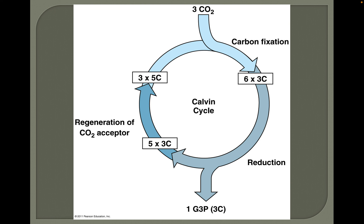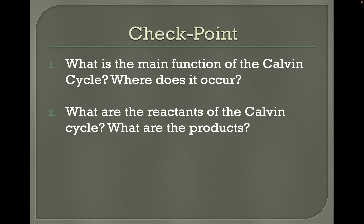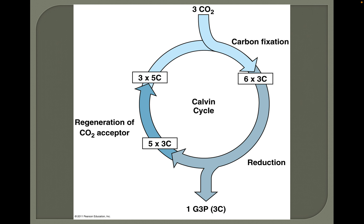The Calvin cycle produces G3P, a three-carbon sugar. If you remember our summary equation, glucose sugar has six carbons. The Calvin cycle has to occur two times, and then two G3P molecules combine to create one six-carbon glucose molecule.